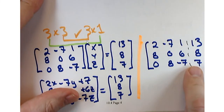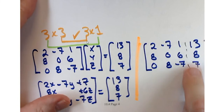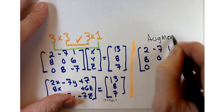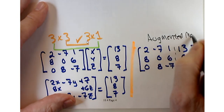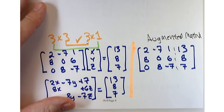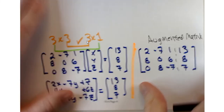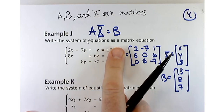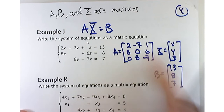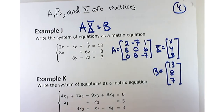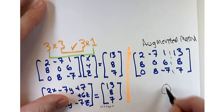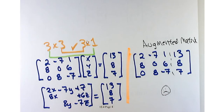Just a reminder of what not to do: the wrong answer for 'write as a matrix equation' would be an augmented matrix — which for this system would be [2, negative 7, 1, 13; 8, 0, 6, 8; 0, 8, negative 7, 7]. That is an augmented matrix — much different from the matrix equation AX equals B. If you write an augmented matrix when asked for a matrix equation, you're going to be unhappy, and so am I.